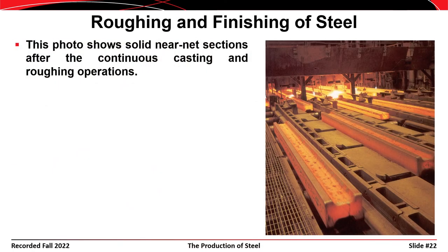This slide shows rough sections coming off a continuous casting operation — near net sections. If you look at the cross section of these pieces, they look like H's or I's. Rather than starting with a rectangular cross section and shaping it into an I-beam, you start with something closer to the final shape, requiring less energy, less time, and less machine maintenance. This is a near net section, which is an alternative to a bloom. In the back, there also appear to be some billets or blooms as well.